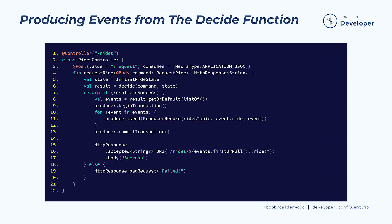Our first connection between our core domain and the streaming data platform is implementing our state change slices using a Kafka producer and the decide function. For example, here we have a code snippet representing the handling of the requestRide command. First, we configure our producer with the appropriate serializer for our event transfer types that we just registered in the schema registry. In this snippet, a correctly configured producer is provided to our web service endpoint method by our web framework.